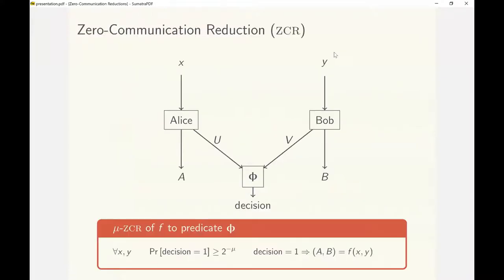Now let me tell you what a zero communication reduction is. It is a really simple model for two-party secure computation where, as the name suggests, the two parties do not communicate at all.